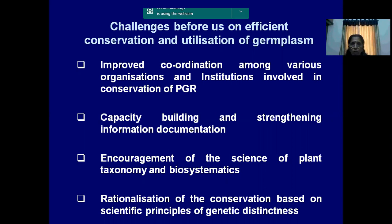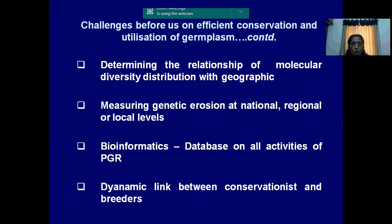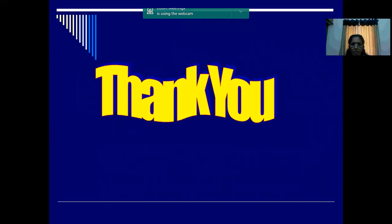What are the challenges before us for efficient conservation and utilization of germplasm? Coordination among the different institutes involved in PGR, capacity building, encouragement of scientists for plant taxonomy and biosystematics - because many people do not know how wild species are identified based on taxonomic characters. Scientific-based conservation is also needed, determining the molecular diversity among different accessions, and measuring genetic erosion at the region, local, and national level. A database of all PGR activities is another important thing which is not properly maintained in our country. There needs to be a dynamic link between conservationists and breeders. Thank you friends.